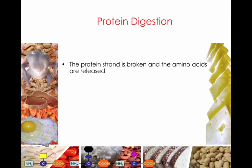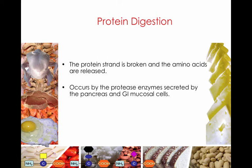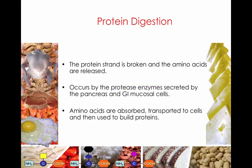This is another way that protein denaturation works — it happens to food in the cooking process and to proteins in our body, as shown with hair. After protein has been denatured, or the protein strand is broken, the amino acids are released. This occurs by enzymes secreted in the pancreas and on the cells lining the gastrointestinal tract — these are called protease enzymes. They break down proteins, and the amino acid chain is broken down into individual amino acids.